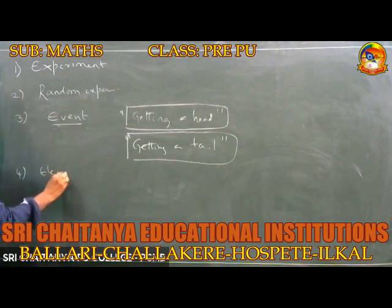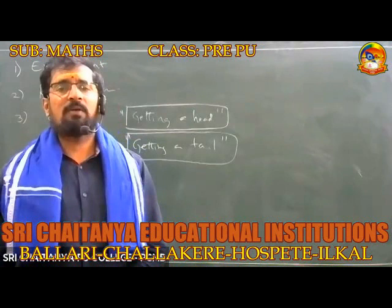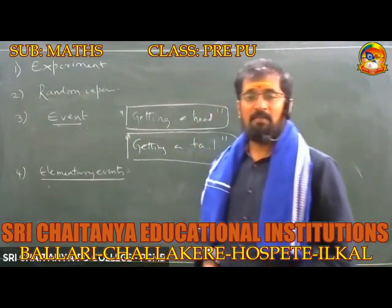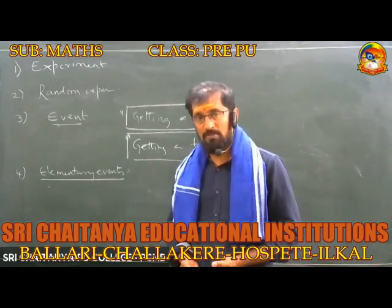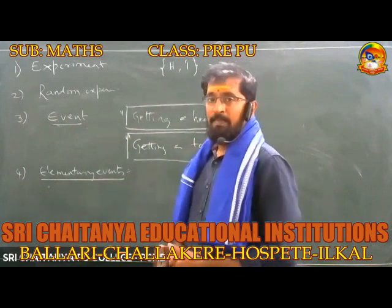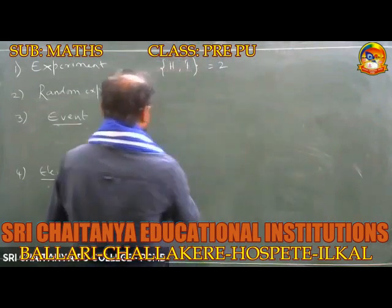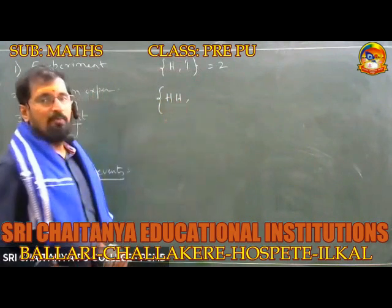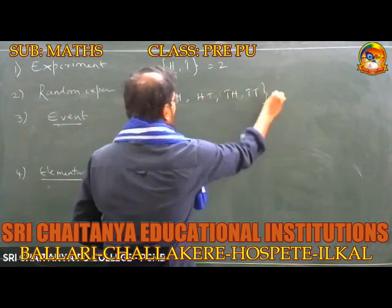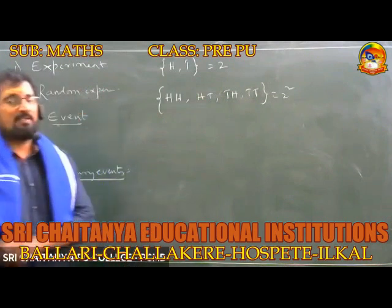What about elementary events? The total number of outcomes in a random experiment are called elementary events. For example, if you toss one coin, the number of elementary events is two. If I toss two coins, I am going to get four elementary events — HH, HT, TH, and TT — which equals 2 squared, that is four. So if a coin is tossed twice, the number of elementary events equals four.